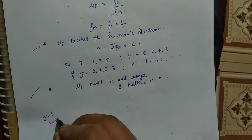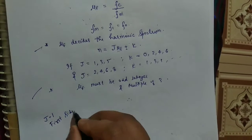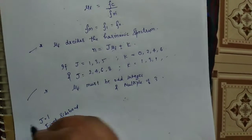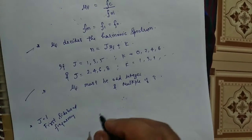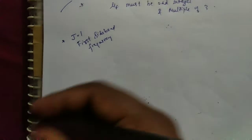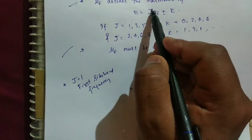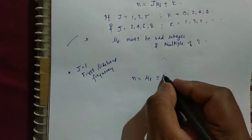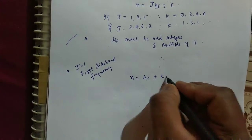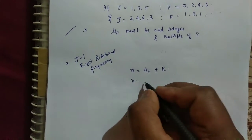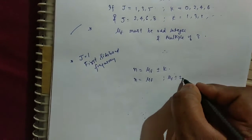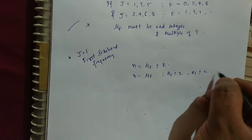This should be the condition that follows always. If J is equal to 1, let's see - this is first sideband frequency. So n is equal to, in this expression put J is equal to 1.